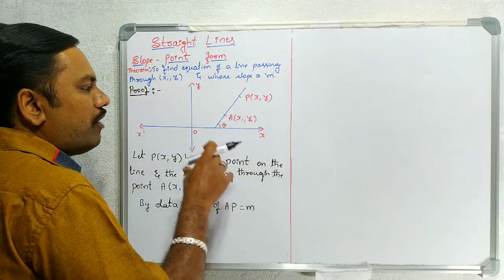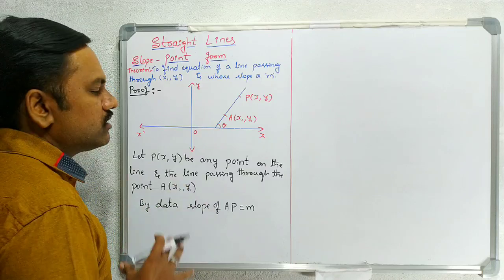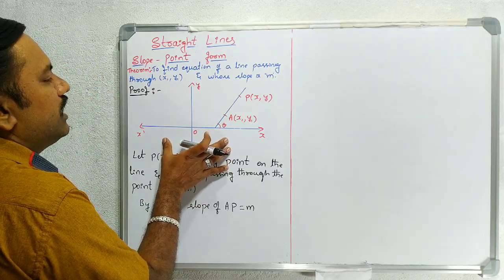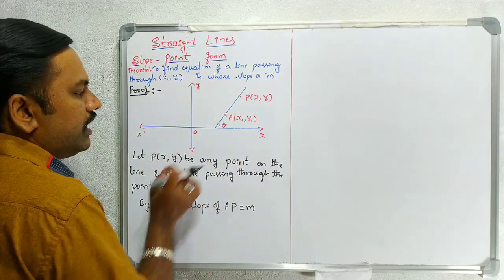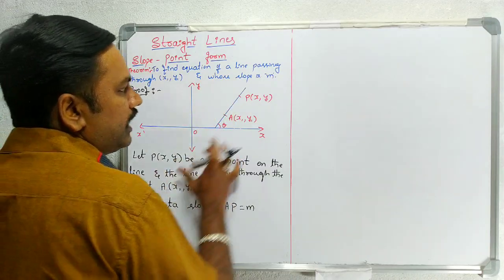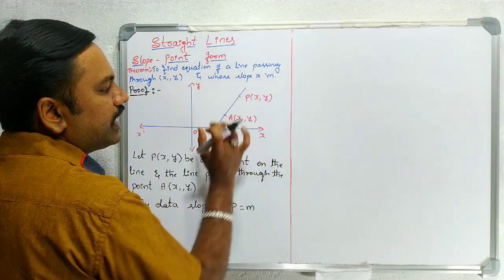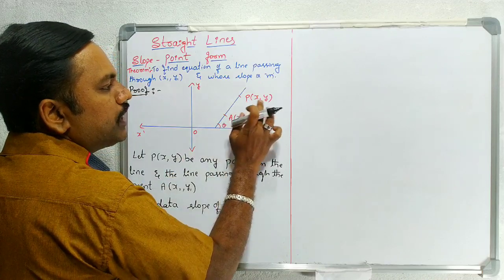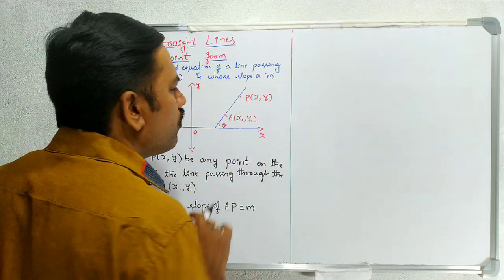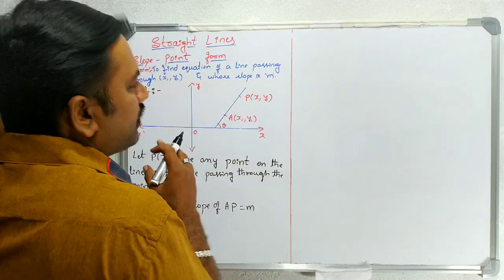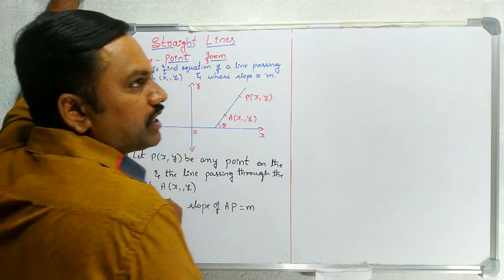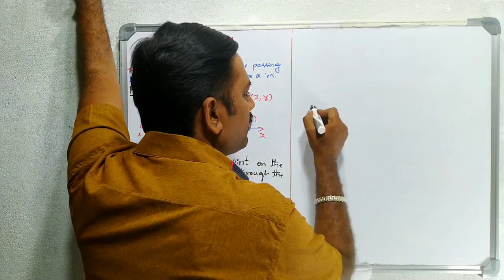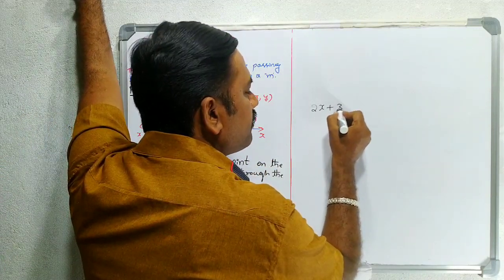To find the equation of the line, as usual draw the x-axis, y-axis, note the origin, and draw the line passing through point A of (x1, y1). Next, take P of (x, y) as any point on the line. Now, in equations we usually see something like 2x + 3y = 5 — so x and y are the variables in the equation.